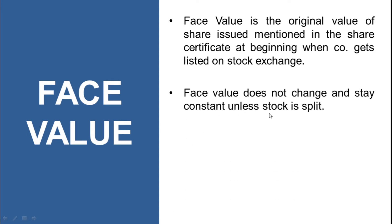Face value does not change and stays constant unless the stock is split. In simple terms, for example, you are having one share of any company. If a stock split happens in a ratio of 1:2, that will mean your one existing share will now be divided into two shares, and for this reason the face value will also be divided. So if the share you were having was of 10 rupees per share, after getting split into two parts it will be 5 rupees each share. This is how a stock split happens and then face value is affected. Other than that, face value will remain constant.